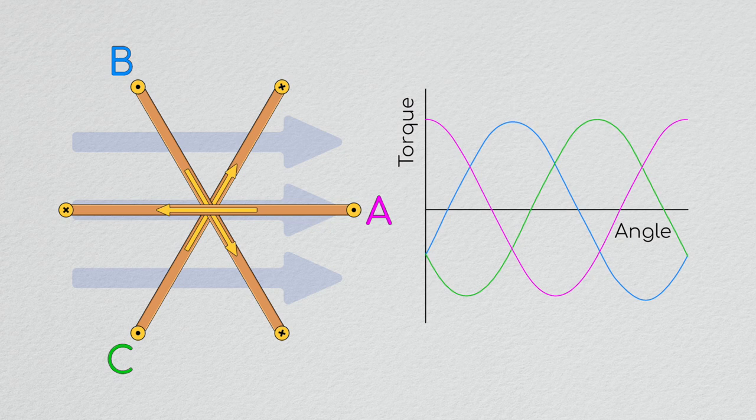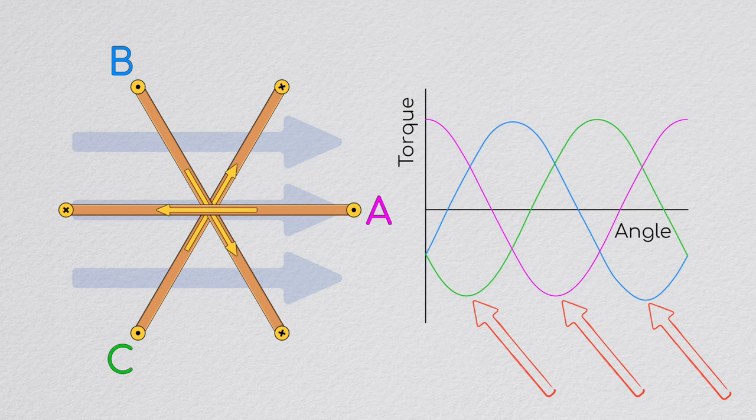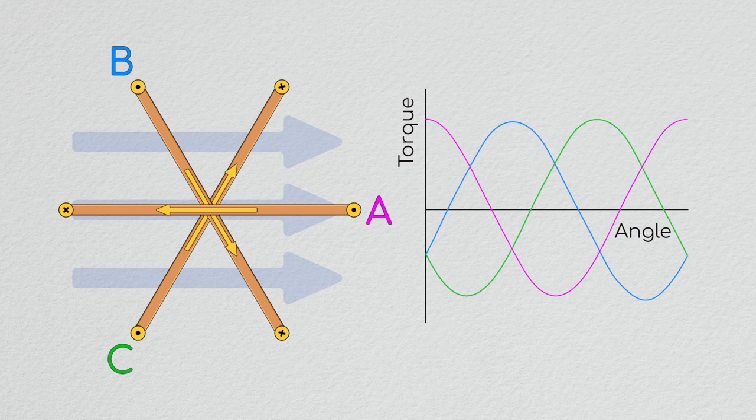However, if we did this we aren't taking advantage of half of the times our loops are aligned with our magnetic fields. This would make our performance non-ideal, not to mention the headache of figuring out how to actually make this switching happen.